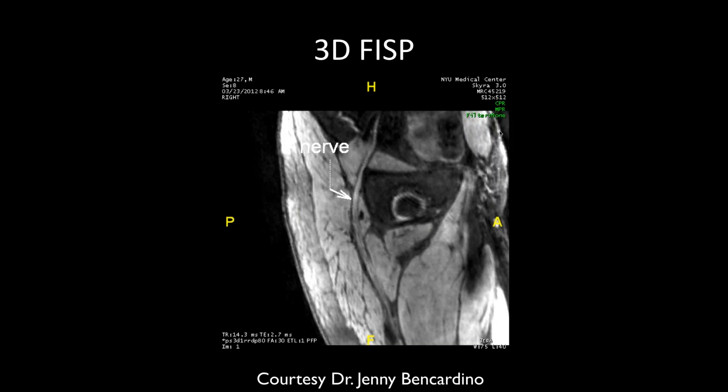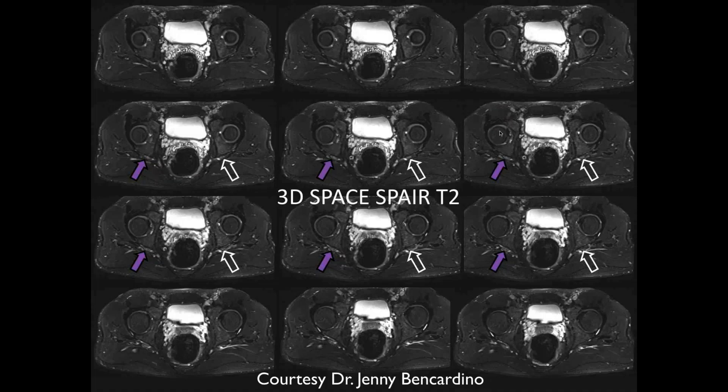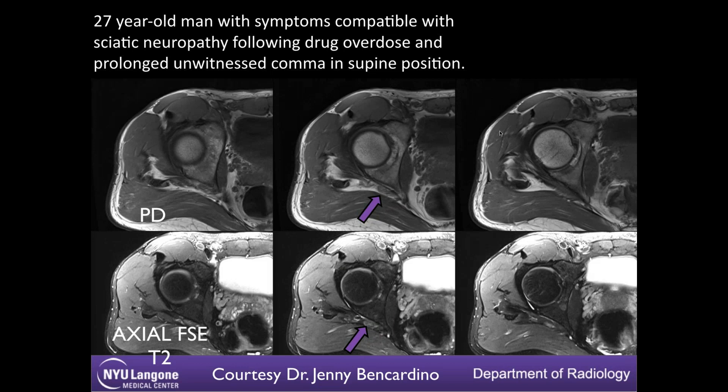This probably is a piriformis syndrome type presentation, though the nerve injury is likely from prolonged compression from being supine rather than from the piriformis muscle itself. These aren't the typical sequences used for this — the mechanism here was really prolonged stretching and compression from the supine position.